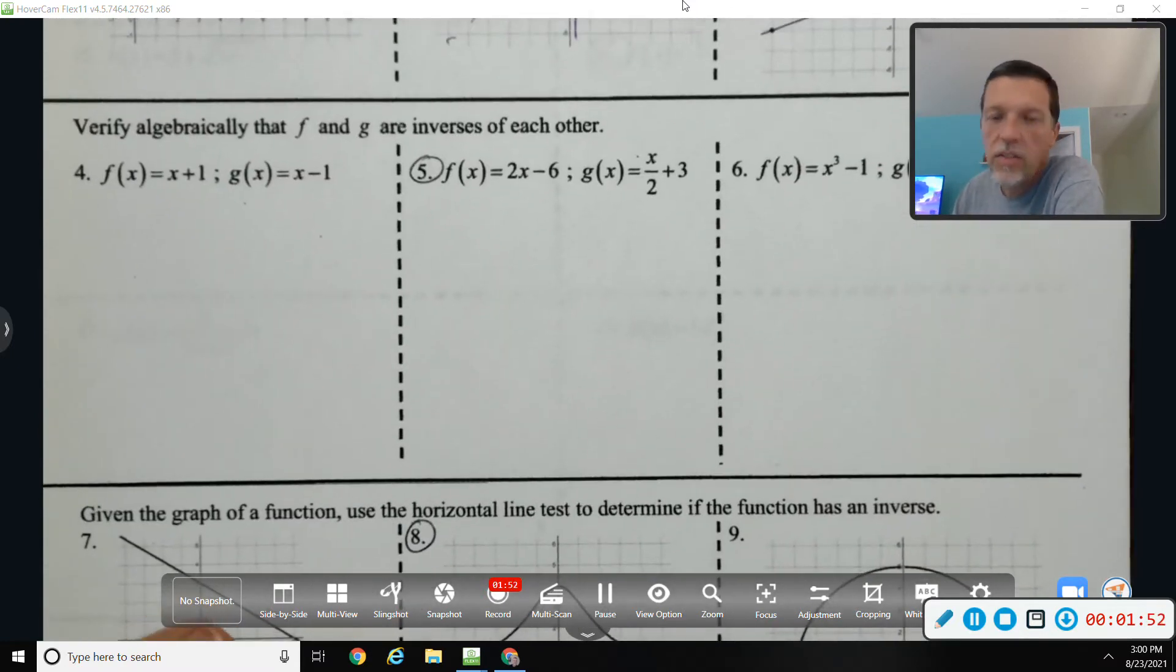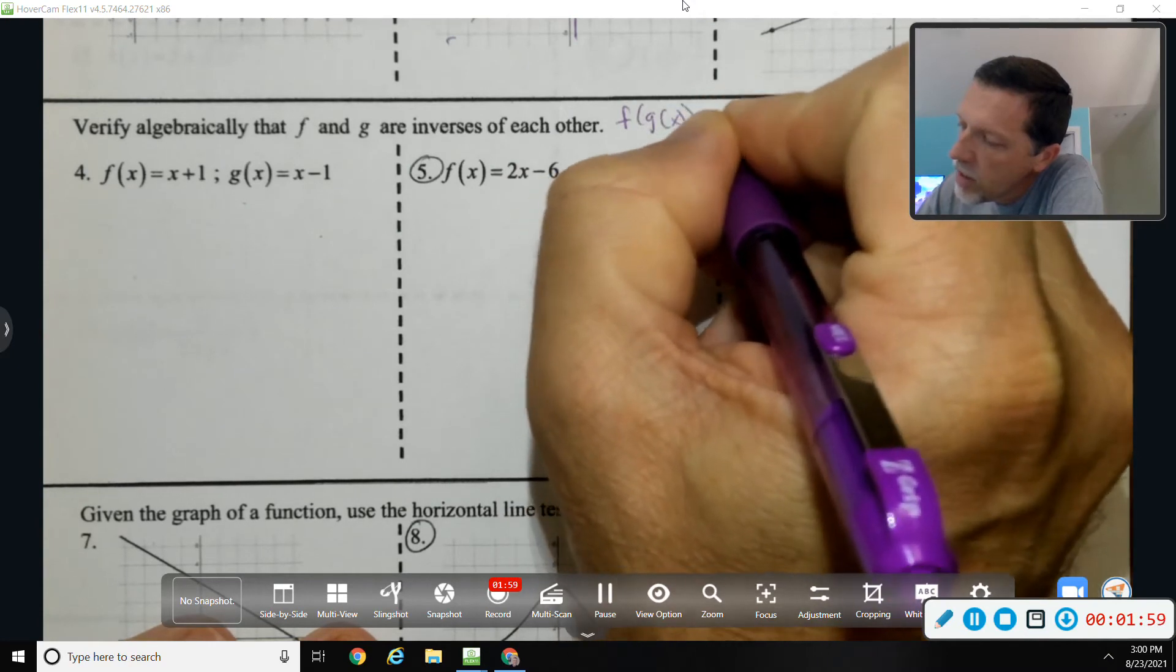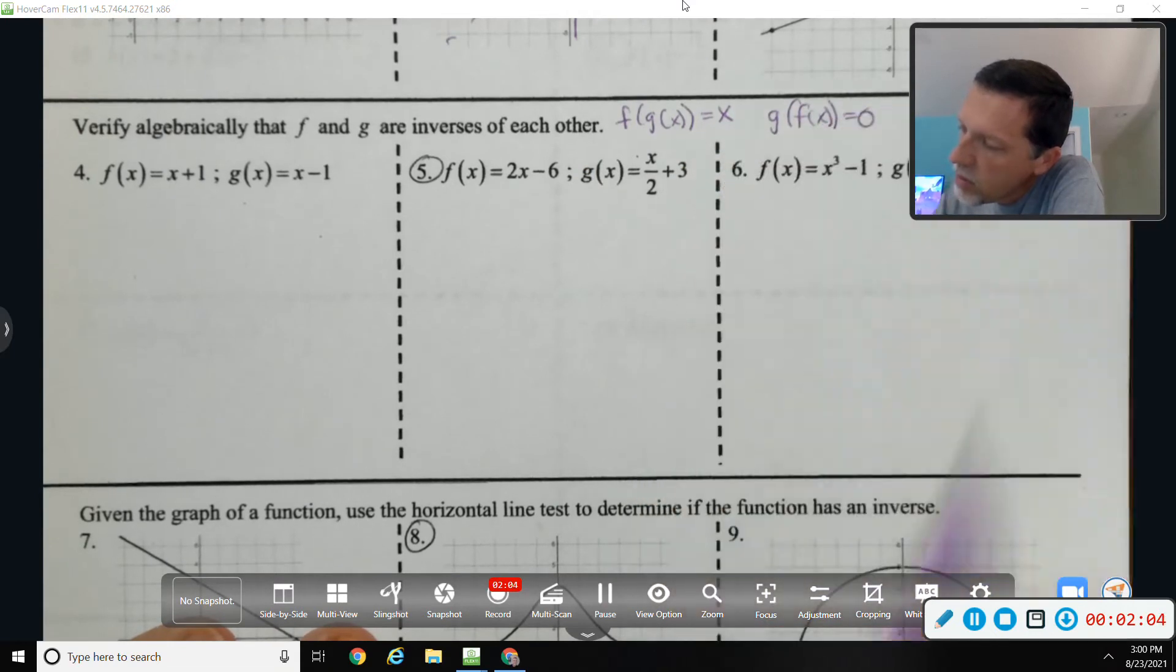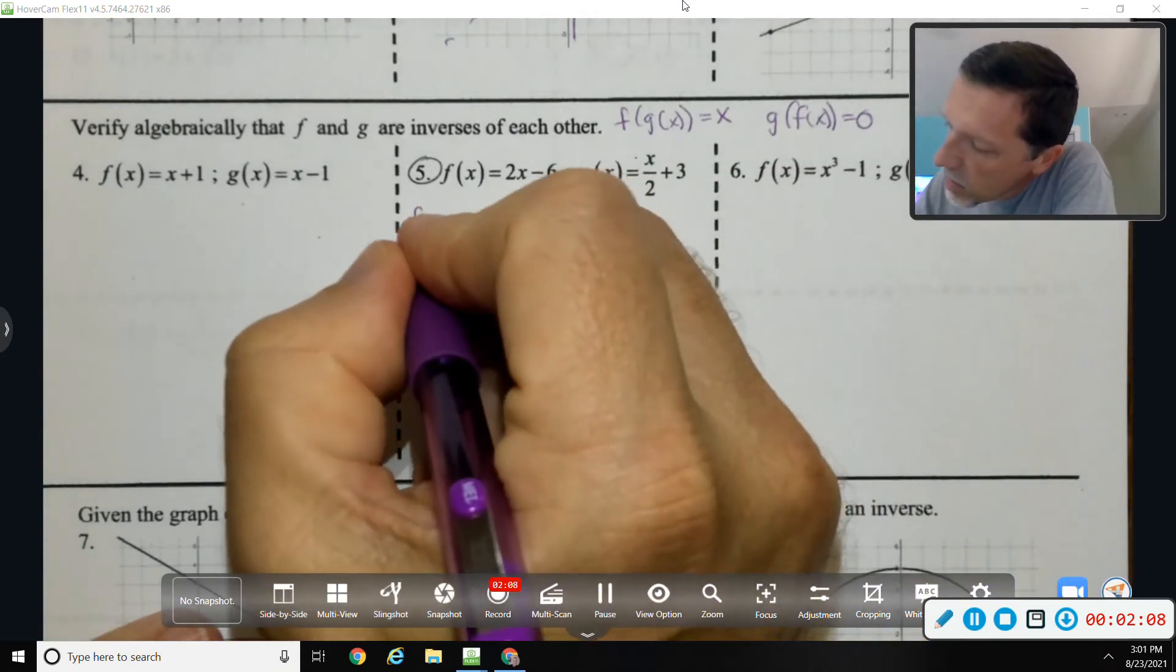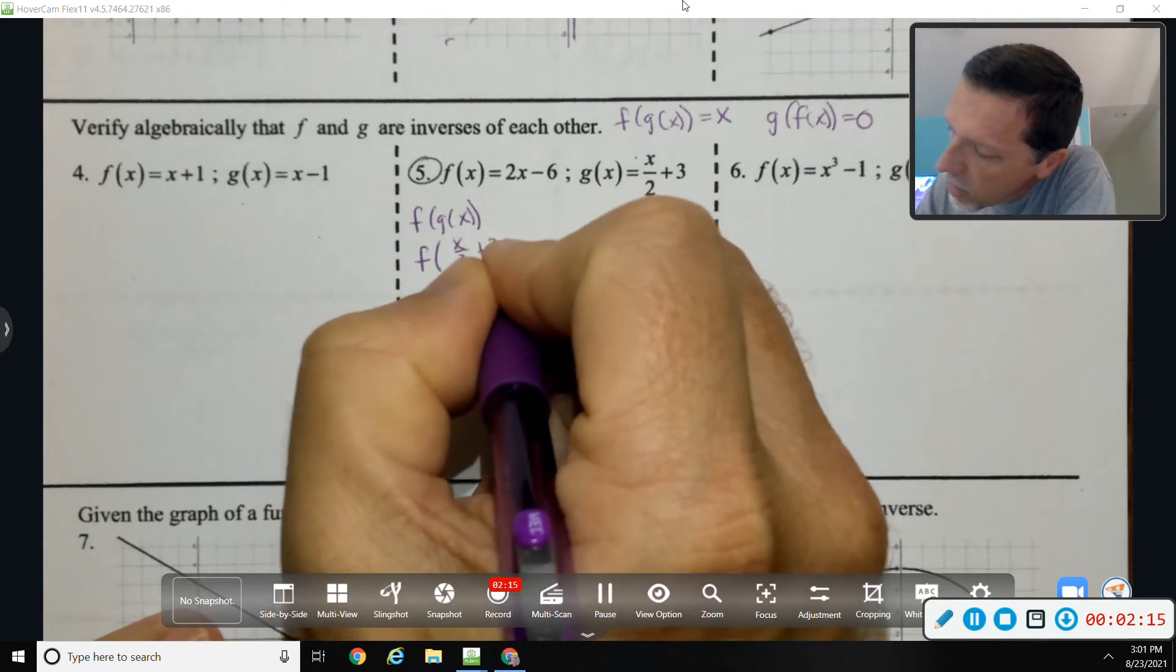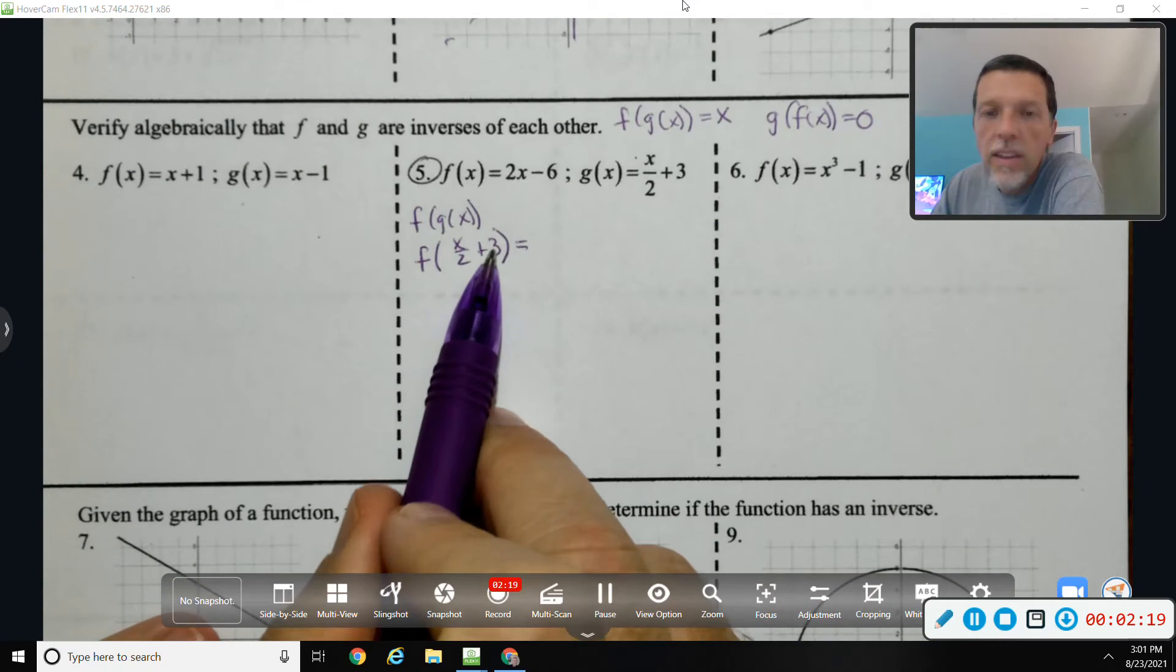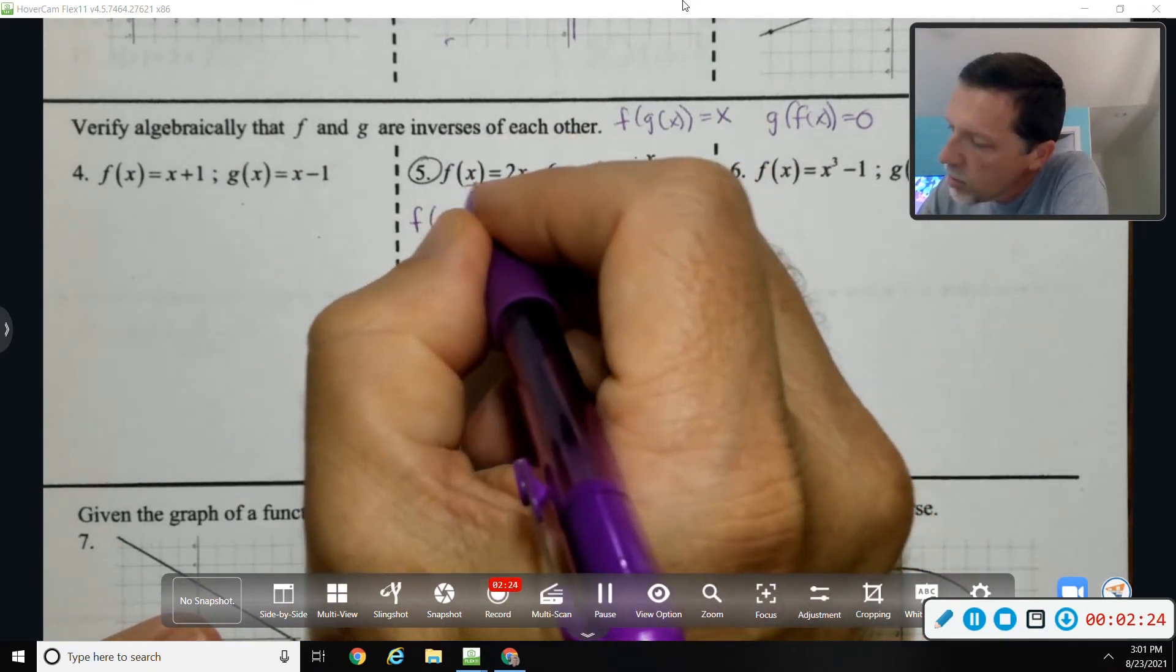Four, five, and six: verify algebraically that f and g are inverses of one another. That means you have to show that f of g of x equals x and g of f of x equals x. So f of g of x, that would be f of x over 2 plus 3, because I plugged in g of x.